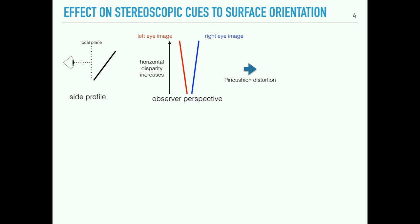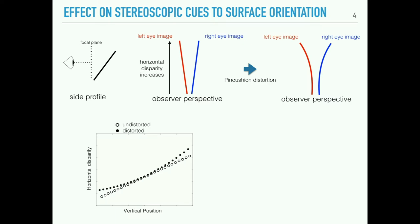When we introduce pincushion distortion, we get curvature. The horizontal disparity becomes a nonlinear function of the vertical position, as shown in this graph where open points are the undistorted image and black points are the distorted image. What this ultimately amounts to perceptually is a convex direction of curvature of the image surface — slants near the top are overestimated and slants near the bottom are underestimated.